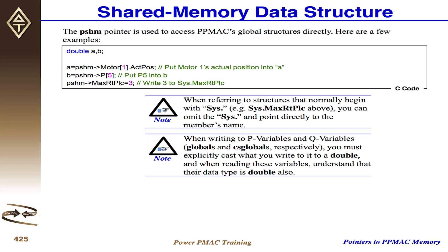You're always reading a whole word. Some structures in the script environment will mask and shift certain parts of the word for you, but when you go to read it in C, you're actually getting all 32 bits of the word. You need to mask and shift to get the particular bits out of that word that you need.